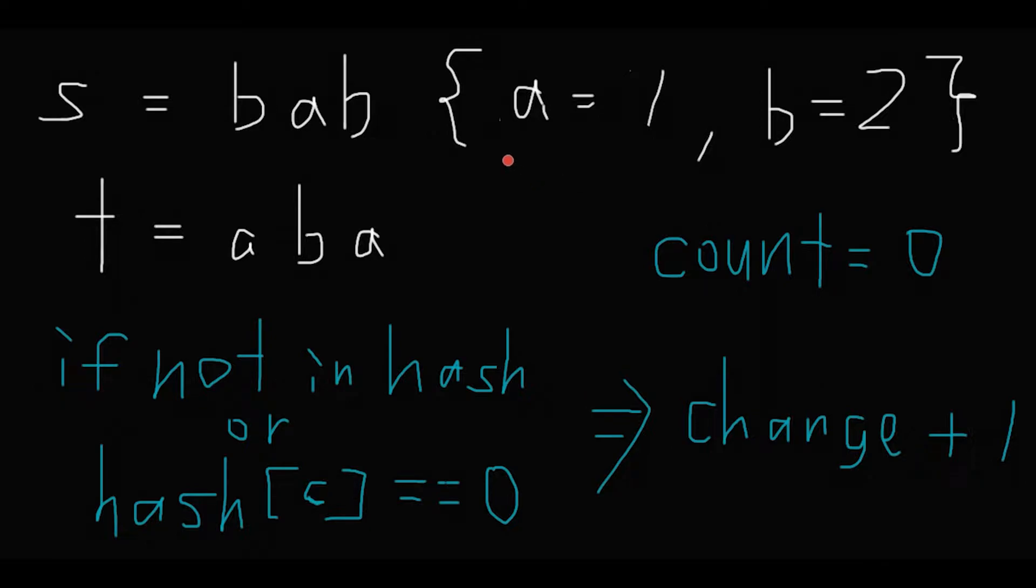To solve this question, my strategy is like this. First of all, count each character of s with a hash table. So as a result, a is 1, b is 2.